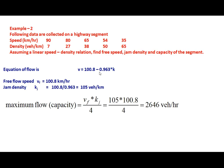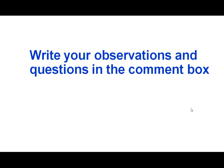From this equation: free flow speed is obtained by setting K = 0, giving V_F = 100.8 km/h. Jam density is A / B = 100.8 / 0.963 = 105 vehicles per kilometer. Capacity — maximum flow — is (V_F / 2) × (K_J / 2) = 100.8/2 × 105/2 = 2,646 vehicles per hour. You may write your observations and questions in the comment box. Thank you very much.